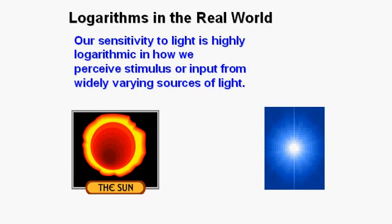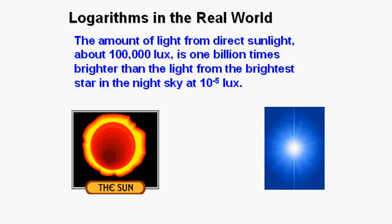Our sensitivity to light is highly logarithmic in how we perceive stimulus or input from widely varying sources of light. The amount of light from direct sunlight, about 100,000 lux, is one billion times brighter than the light from the brightest star in the night sky at 10 to the negative 5 power lux.